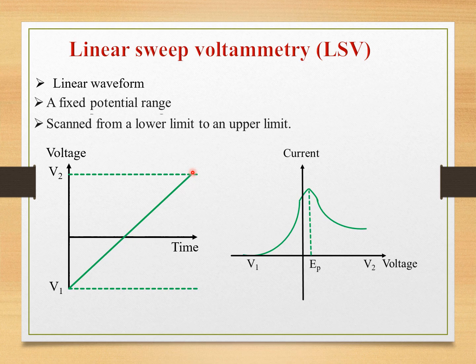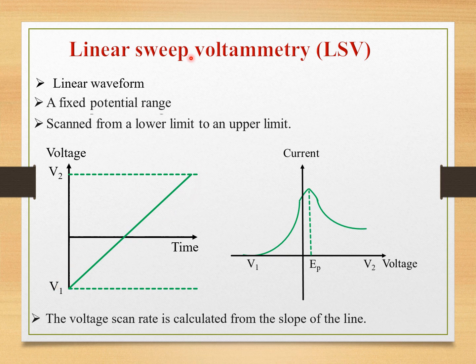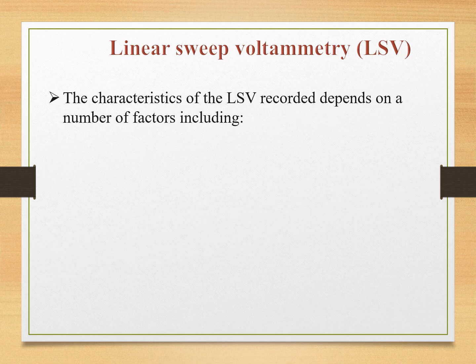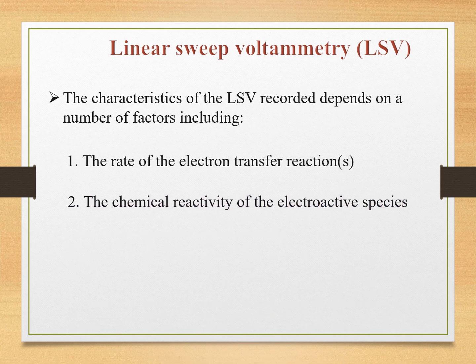The resultant voltammogram is shown here. As we apply voltage from V1, the current starts to increase and reaches a maximum point which is called the peak position or peak current, and then the current starts to decrease. This voltage scan rate is calculated from the slope of this line. The characteristics of the LSV recorded depend on a number of factors such as the rate of electron transfer reactions, the chemical reactivity of the electroactive species, and the voltage scan rate.